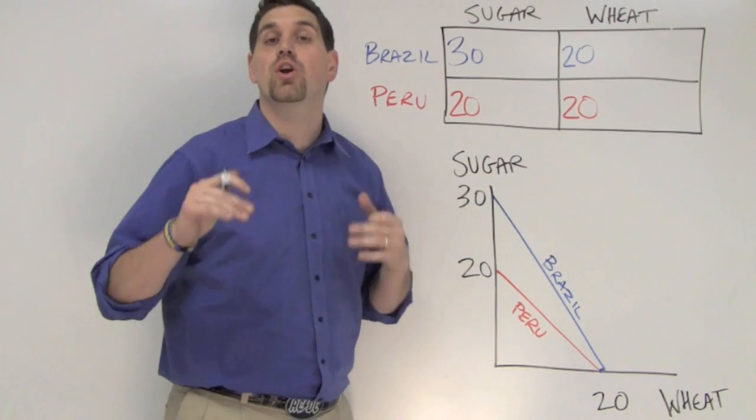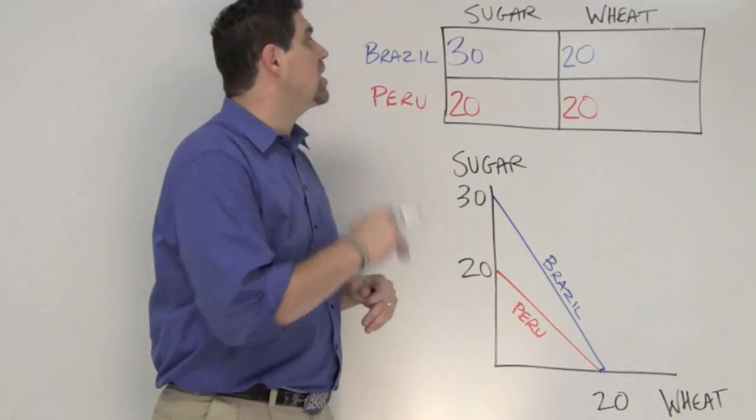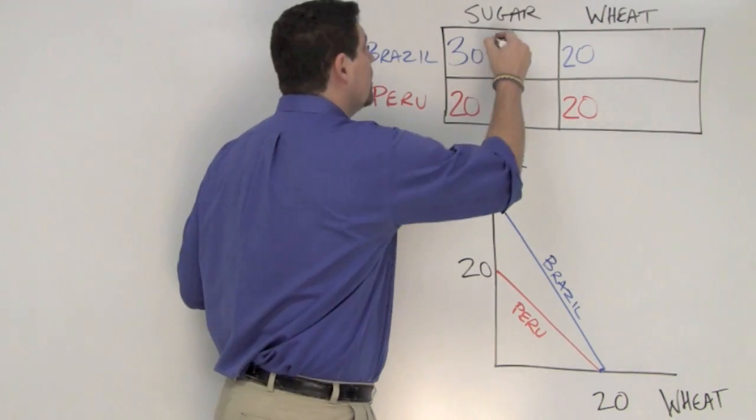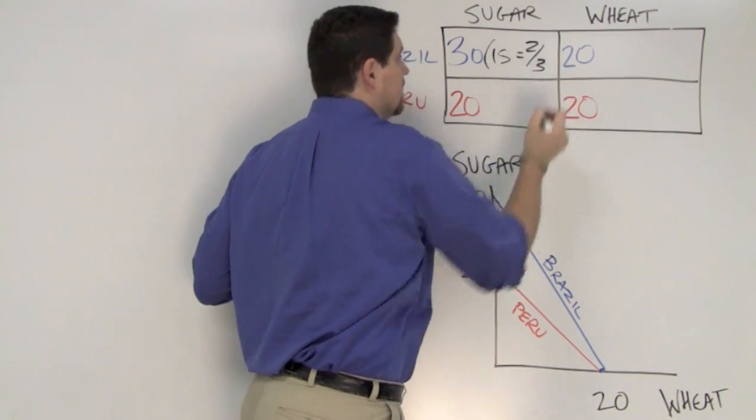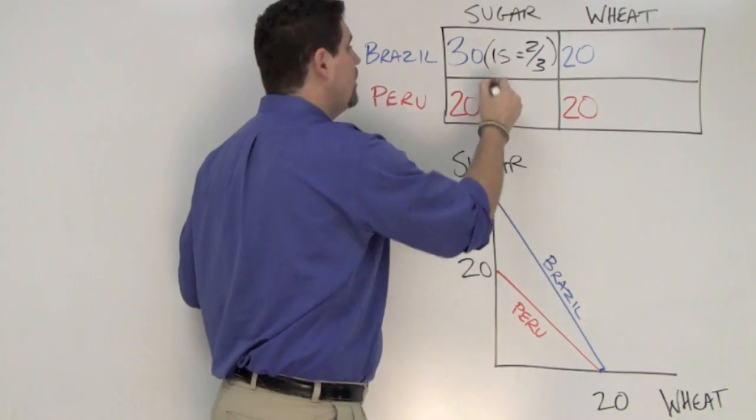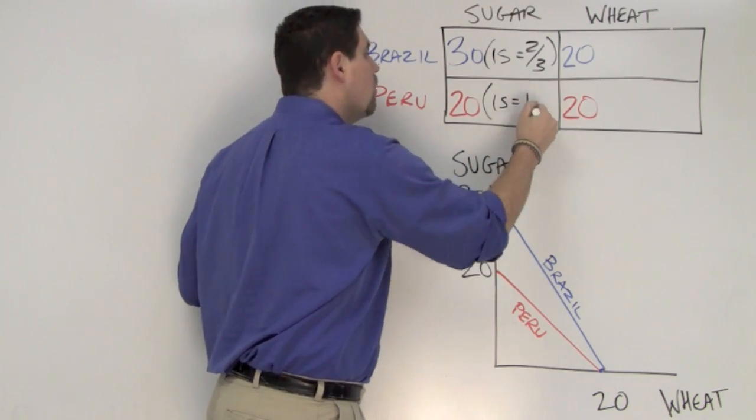Now let me show you how you calculate per unit opportunity cost to figure out which country has a comparative advantage. For Brazil, each one sugar costs a certain amount of wheat. Well, it costs two-thirds of wheat. And for Peru, each one sugar costs one wheat.